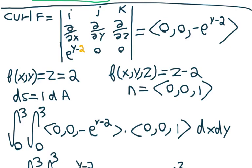So let's calculate the curl of f. Over here, we are going to plug in our z equals 2 value, and we are going to calculate the curl, which gives us a vector of 0, 0, and minus e with the exponent y minus 2.